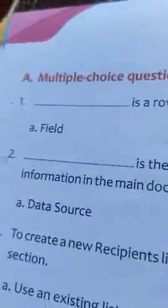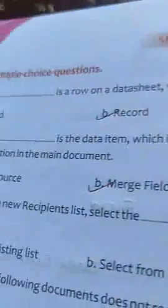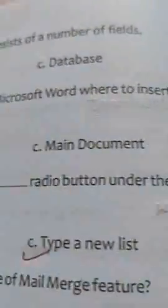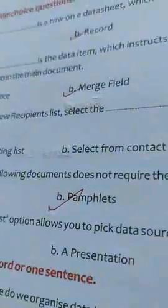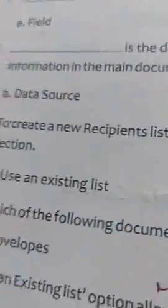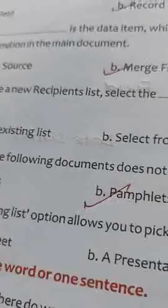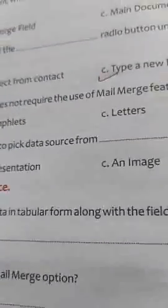Now MCQ of chapter 4. First question: a record is a row in a datasheet which consists of a number of fields. Second question: a merge field is the data item which instructs Microsoft Word where to insert the data source information in the main document. Third question: to create a new recipient list, select the blank radio button under the selected recipients section — answer is type a new list. Fourth question: which of the following documents does not require the use of mail merge features — answer is pamphlets. Fifth question: the use an existing list option allows you to pick a data source from a spreadsheet.